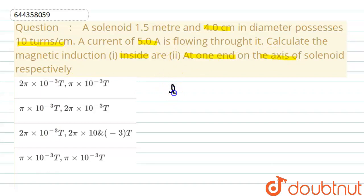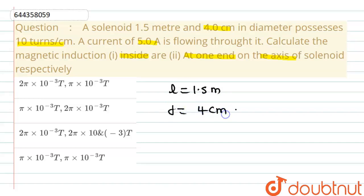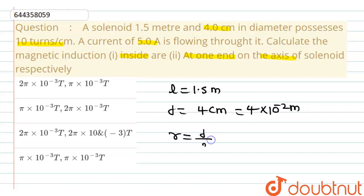According to the question, the length of the solenoid L is 1.5 meter, and its diameter is 4 centimeter, that is 4 × 10⁻² meter. Hence the value of radius r will be equal to diameter divided by 2, that is 2 × 10⁻² meter.